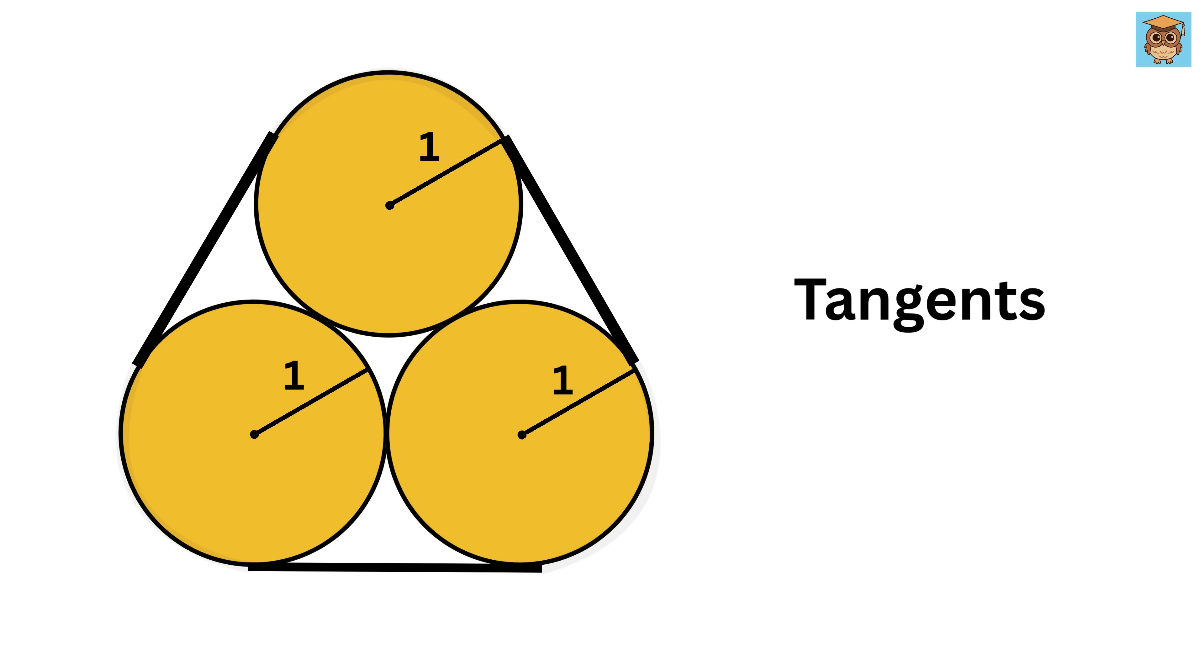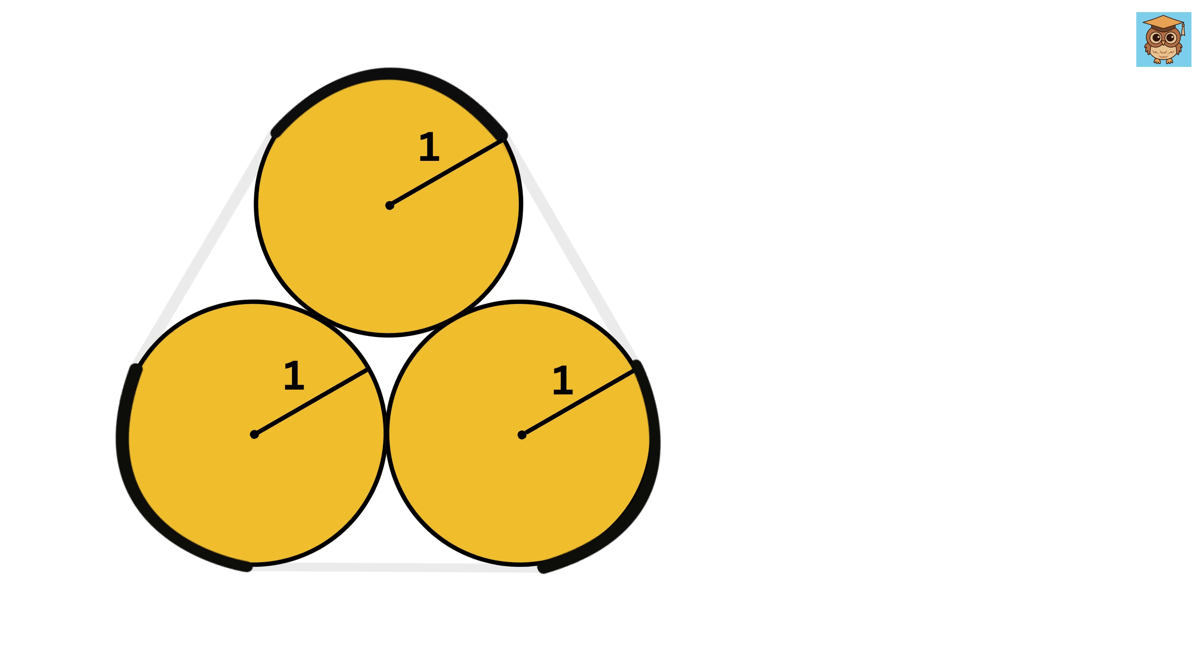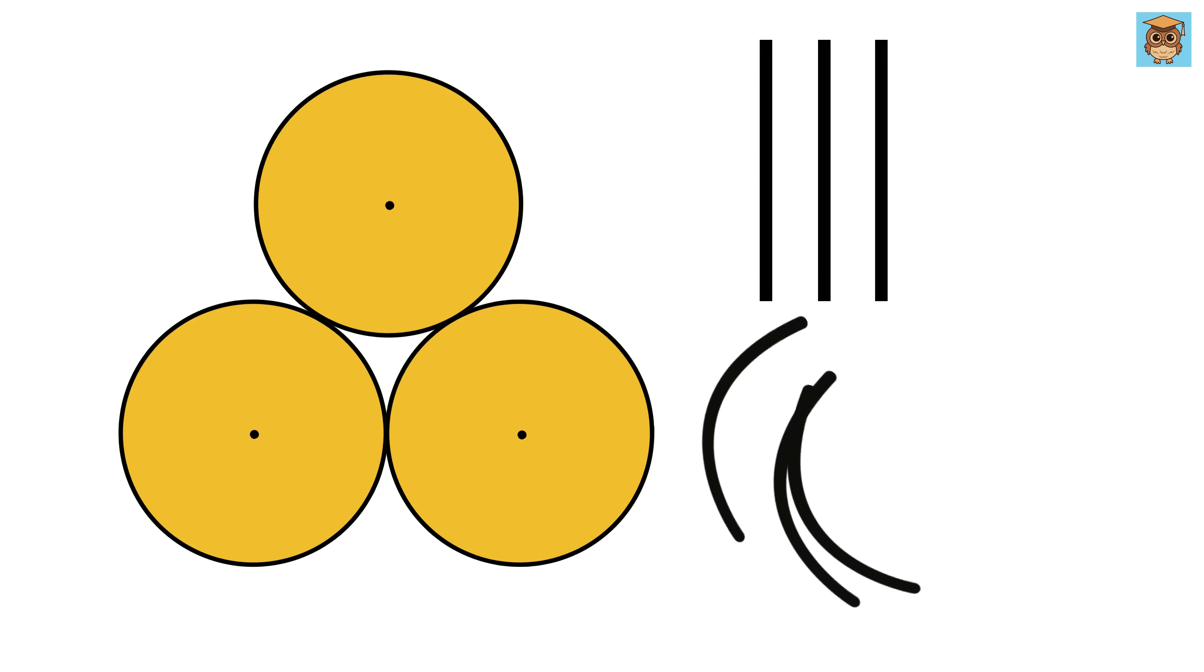To find the total length of the elastic band, we need to calculate the length of the three straight line segments and the length of the three curved segments. Now let me tell you a property of externally touching circles.